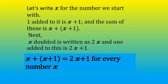Let us write x for the number we start with. One added to it is x plus 1, and the sum of these is x plus x plus 1. Here the bracket is important: x plus x plus 1. Next, x doubled is written as 2x, and one added to this is 2x plus 1. These two are the same, therefore x plus x plus 1 is equal to 2x plus 1, for every number x.